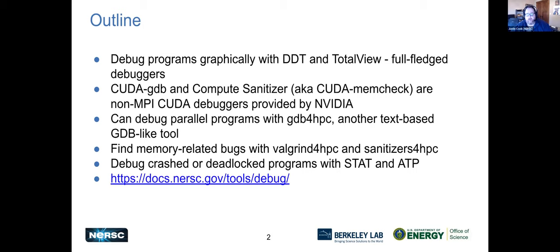For finding memory-related bugs, there are two tools provided by Cray: Valgrind for HPC and Sanitizer for HPC. The 'for HPC' part means Cray took Valgrind, added ways to launch it with SRUN in parallel using MPI, and applied the regular tool to it. For debugging crashes or deadlocks, there's STAT (Static Trace Analysis Toolkit) and ATP (Abnormal Termination Processing). All of these tools are listed on the debug web page.